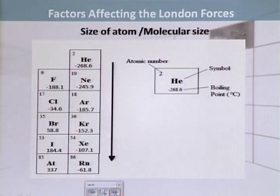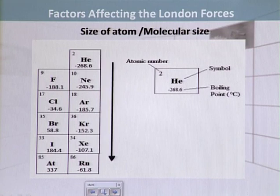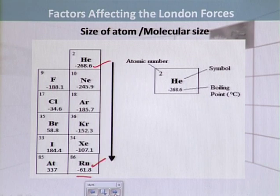Here we have a portion of the periodic table showing noble gases and halogens — groups 7 and group 0. The boiling points are mentioned beneath each element symbol. Helium has a boiling point of minus 268.6 degrees centigrade. Moving down the group to radon, the last member, the boiling point is minus 61.8 degrees centigrade. You can see the difference for yourself.